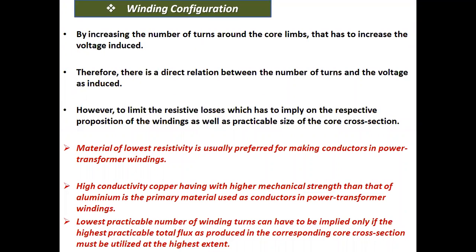Let's start with winding configuration. By increasing the number of turns around the core limbs, the voltage induced increases — there is a direct relation between the number of turns and the voltage induced. However, to limit the resistive losses, this has implications on the respective proportion of the windings as well as the practicable size of the core cross section.